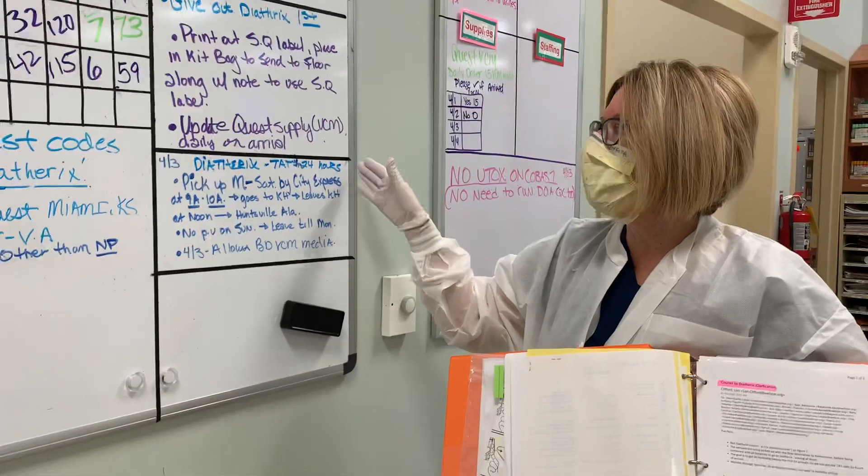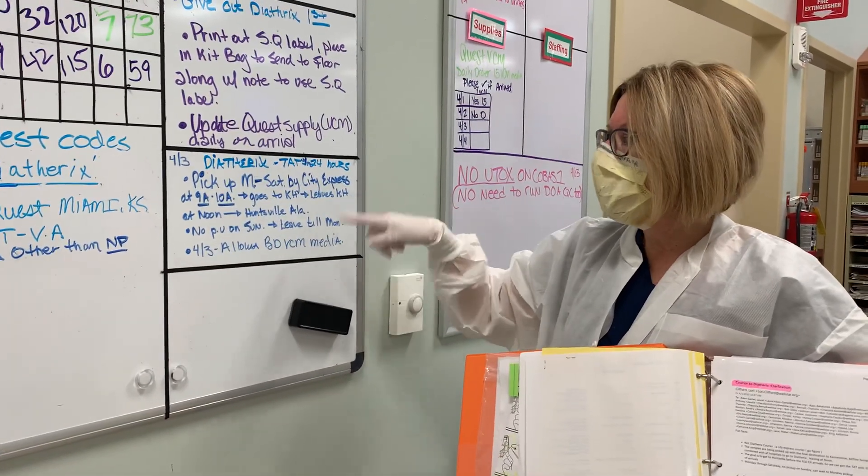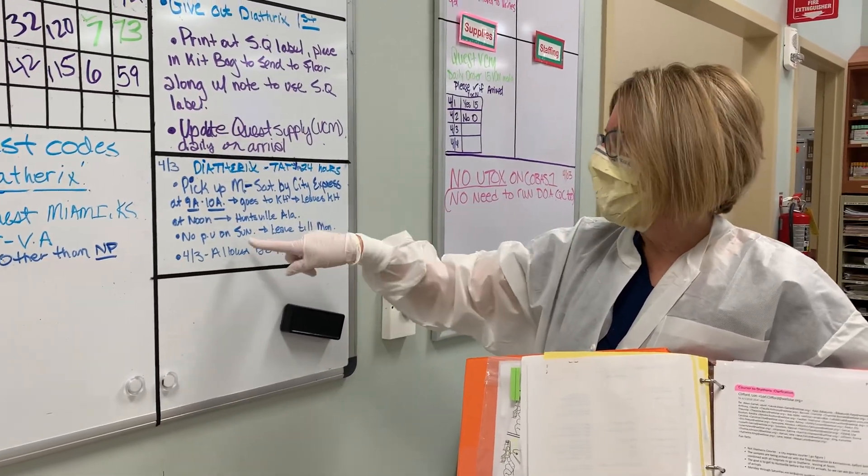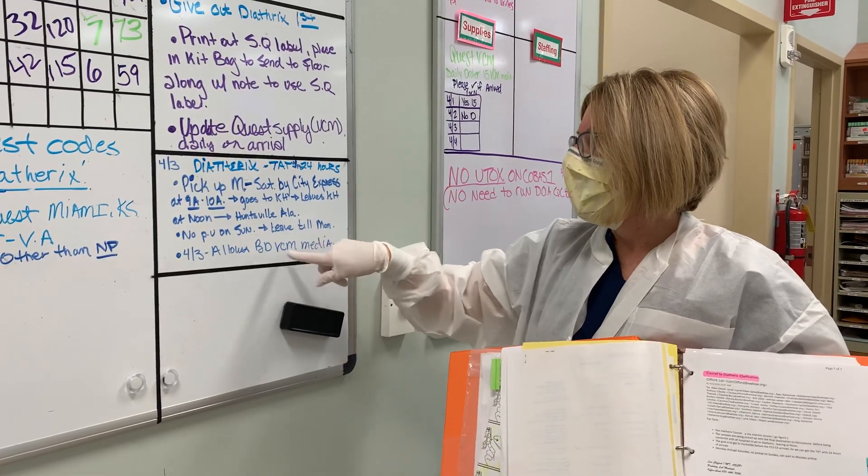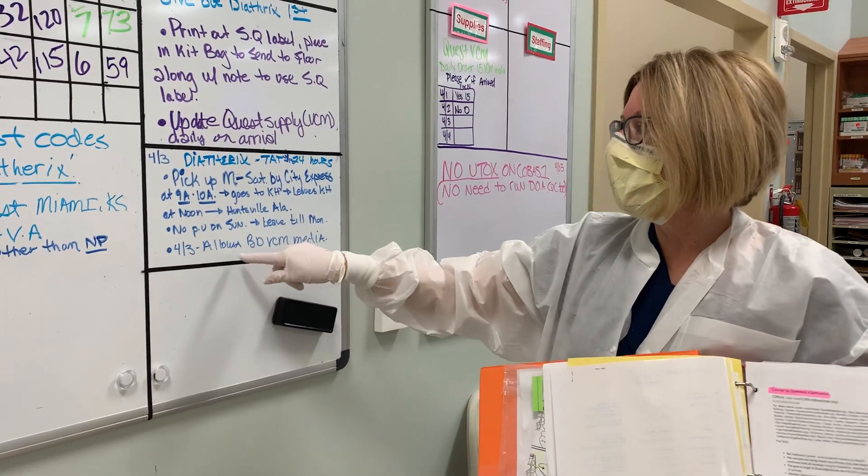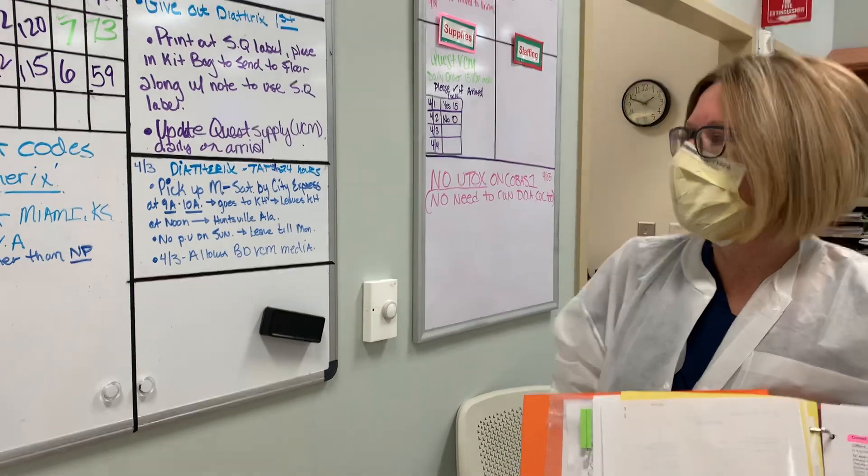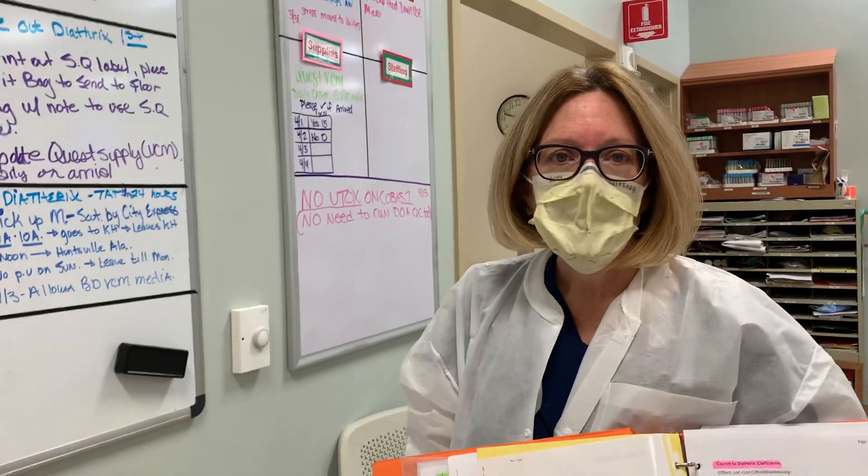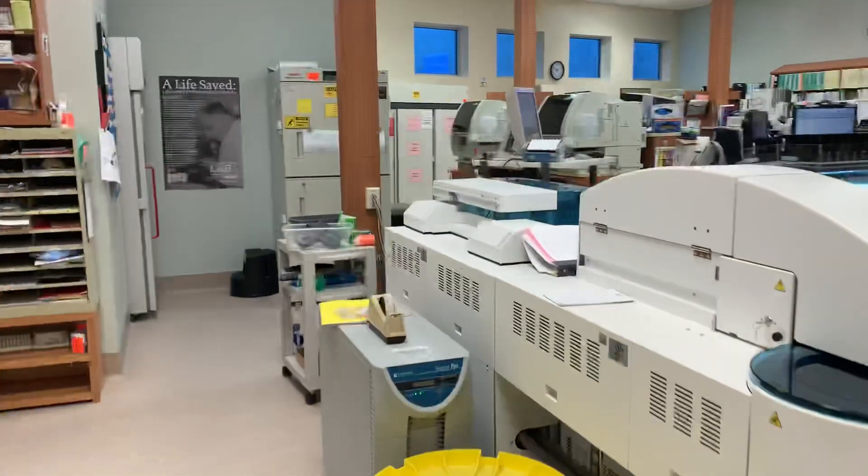Questions about Diatherics? Turnaround time is 24 hours. Here's the pickup time. Here's where it goes. No pickup on Sunday. And today we are allowed 3D-VCM media to be used. So remember, we'll go to Kennistone to be able to go to Diatherics Alabama in Huntsville. Now let's go over to the refrigerator.